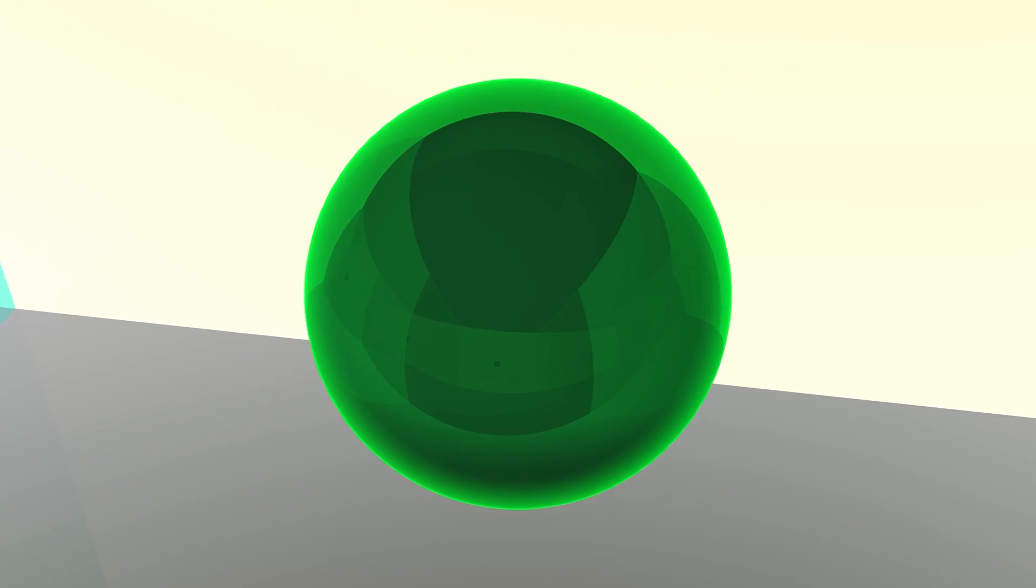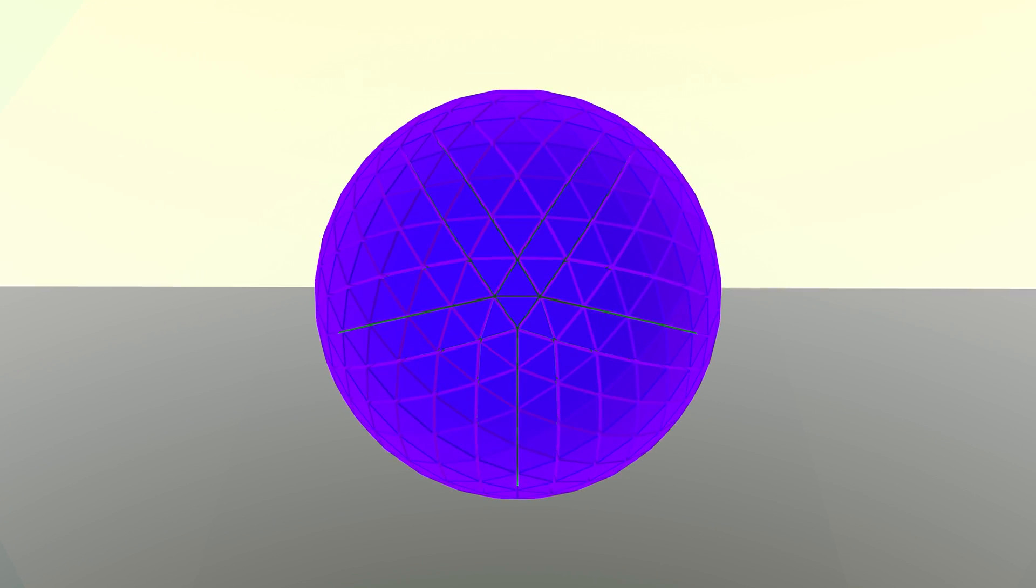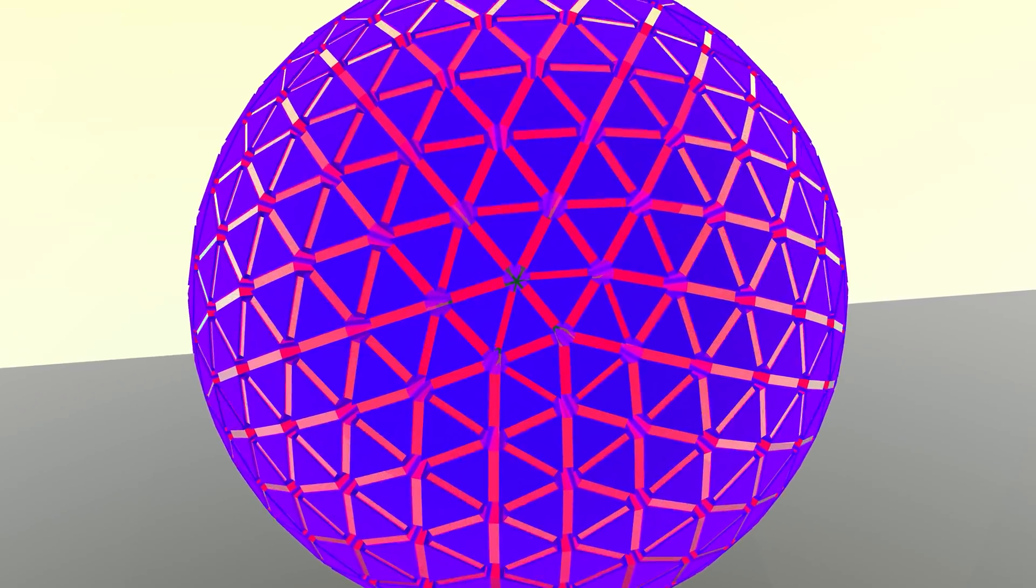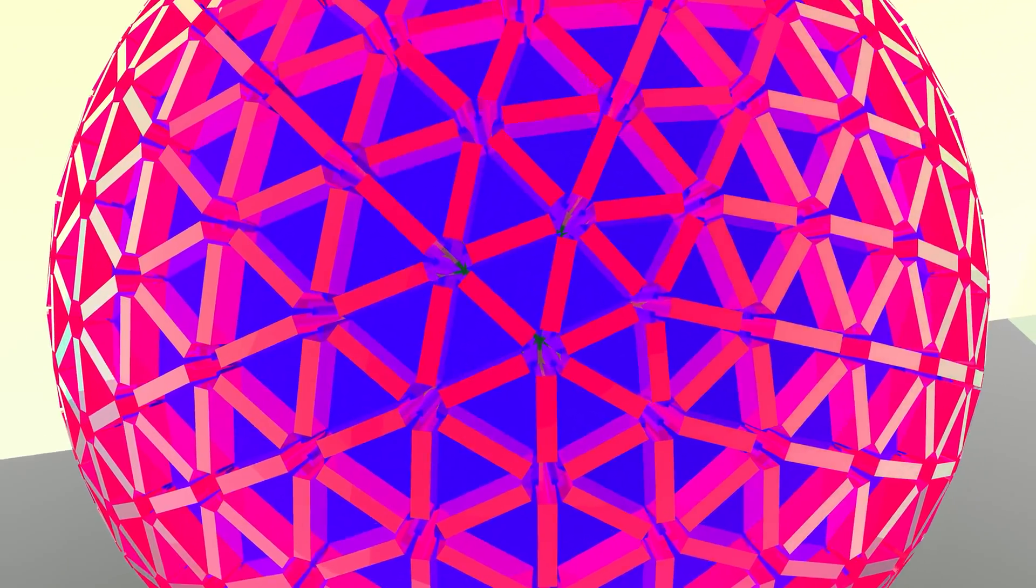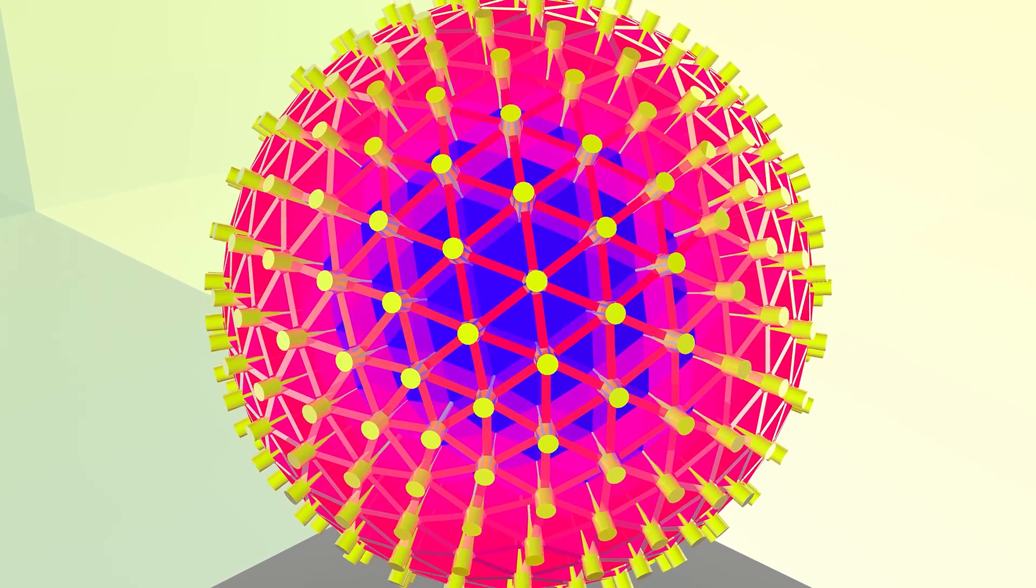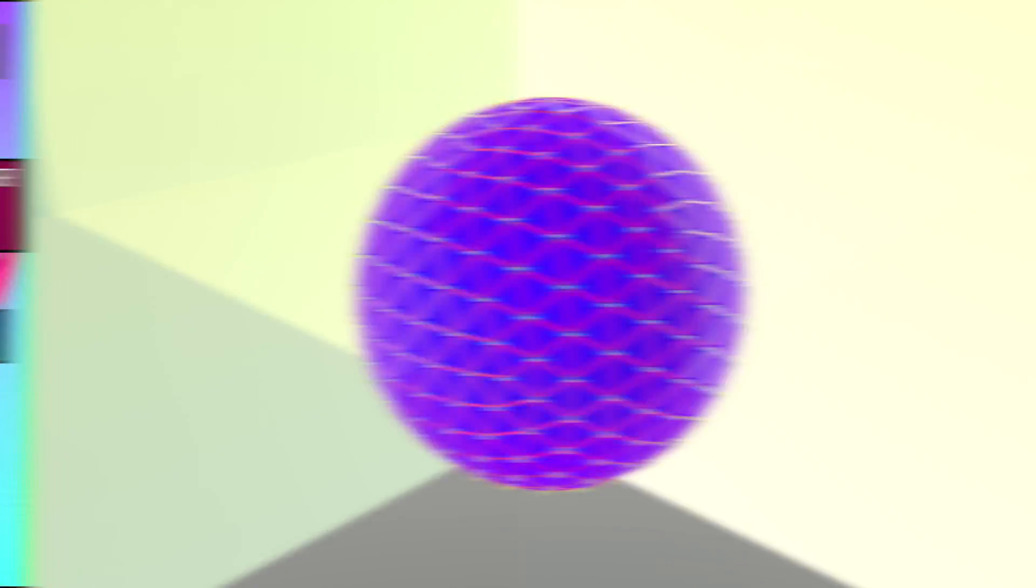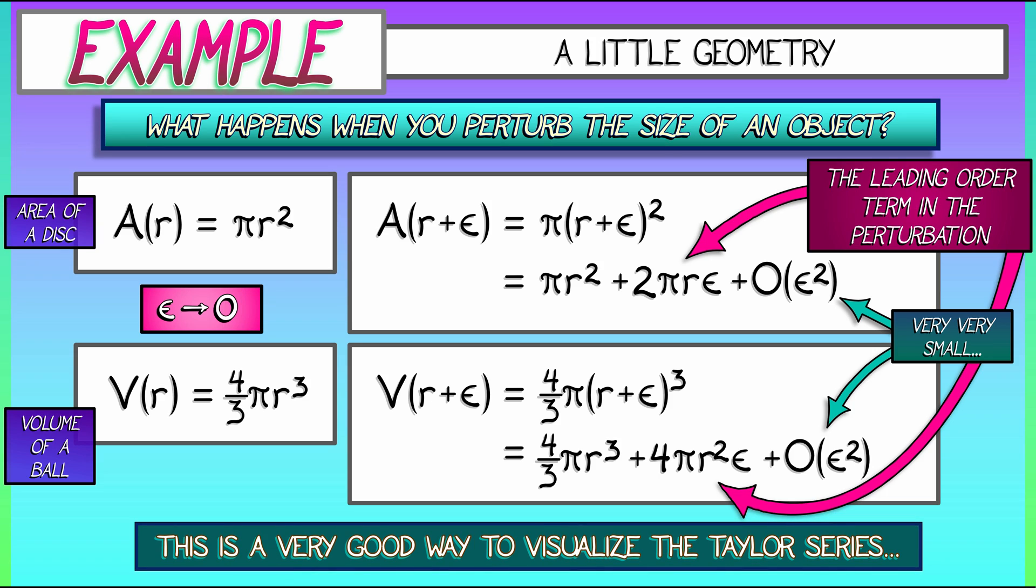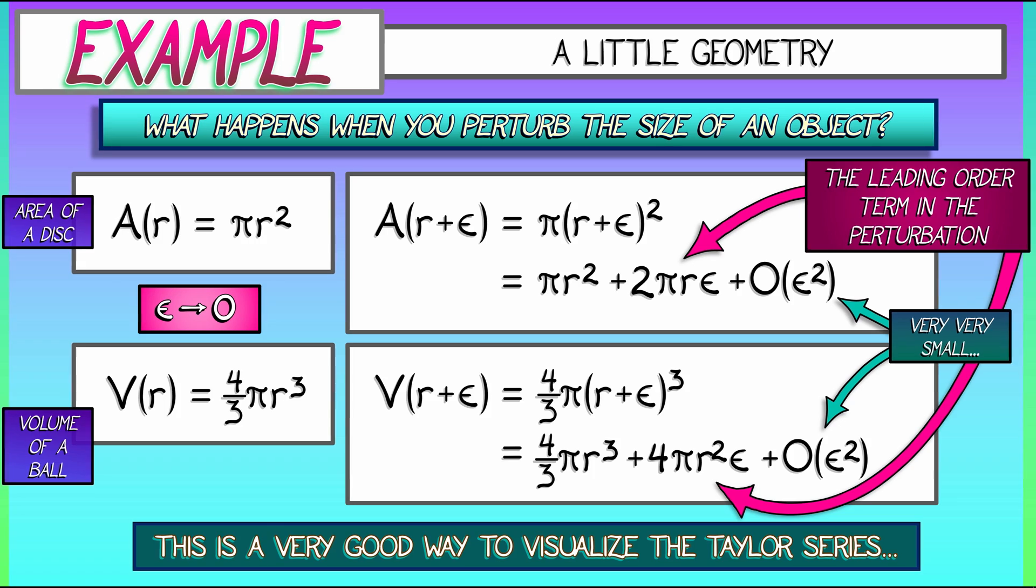Now, if we wanted to be clever, we could break out those terms into those that are of order epsilon squared, and then those that are of order epsilon cubed. And in fact, this is a very good way to visualize the Taylor series in epsilon about epsilon equals zero in this case. But the main story, the thing we're getting at is that you can just put it all in a big O epsilon trash can. Okay, that was some geometry. Let's keep going.